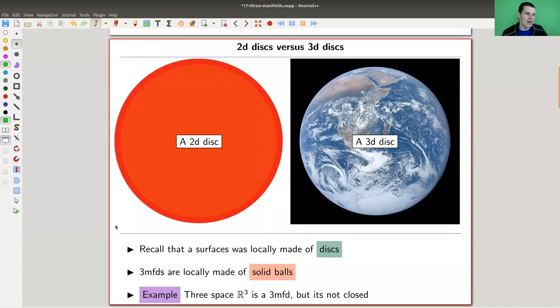For a surface, the surface is locally made out of disks. A disk is just whatever you see here on the left hand side, it's two dimensional.